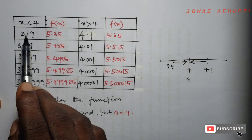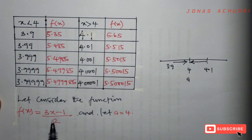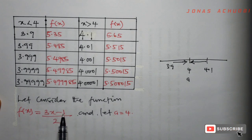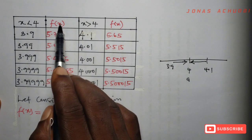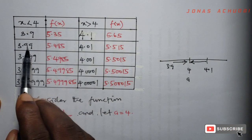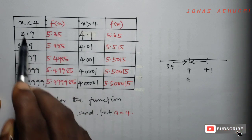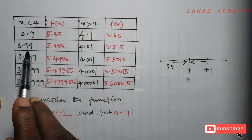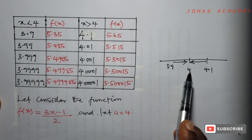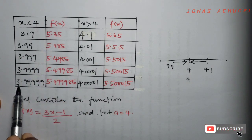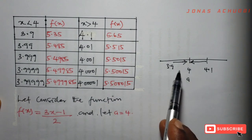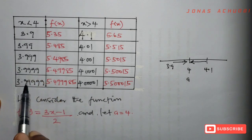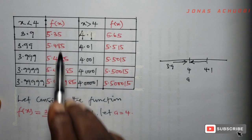If we plug in the value 3.9 from the left hand side into the function 3x minus 1 divided by 2, we get 5.35. If you plug in 3.99, you get 5.485. If you plug in 3.9999, you get 5.49985. Each successive point — 3.99, 3.9999, 3.99999 — is closer to 4 than the previous one, so when you plug in these values from the left hand of 4 into the function, you get these values.